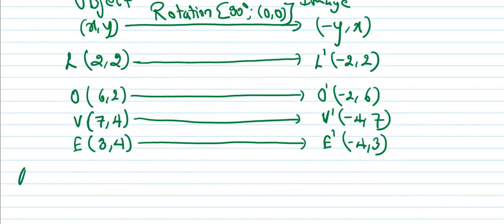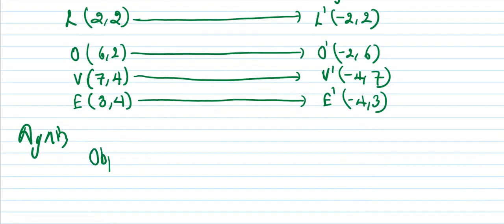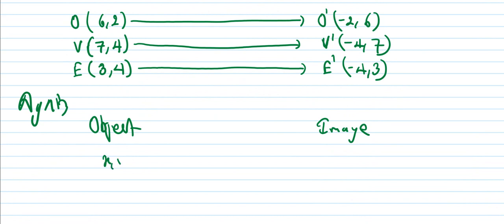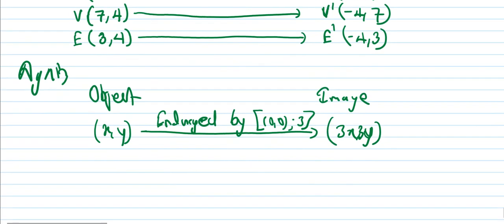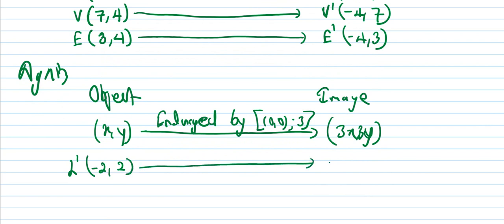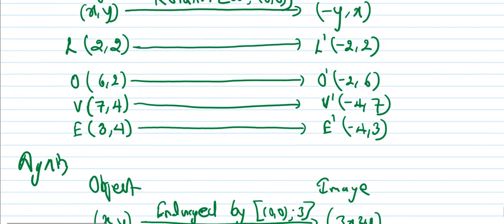So after rotation about positive 90 degrees about origin, we now apply enlargement by scale factor 3 about origin. L dash (minus 2, 2) gives L double dash = minus 6, 6. Then applying scale factor 3 to get the final image coordinates.